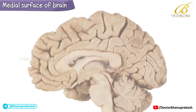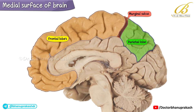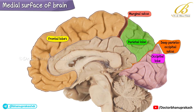The frontal lobe's medial surface is positioned anterior to the marginal sulcus. The parietal lobe is nestled between the marginal sulcus and the deep parieto-occipital sulcus. The occipital lobe is divided primarily by the calcarine fissure, with the primary visual area, or area 17, located along its banks.